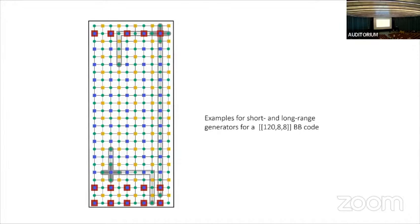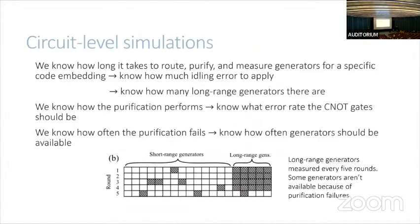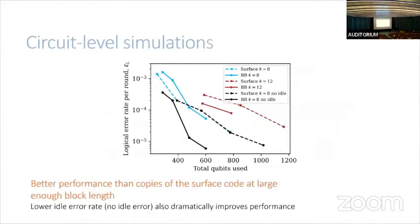A final question asks whether a threshold is obtained. While no asymptotic calculation is done, increasing block length experimentally decreases the error rate, unlike the Delfosse-Beverland-Tremblay paper where logical error rate increases with block length. When asked whether a threshold could theoretically be derived via the purification idea, the speaker says it may be possible by considering the asymptotic scaling of the purification scheme combined with a more rigorously defined routing schedule.